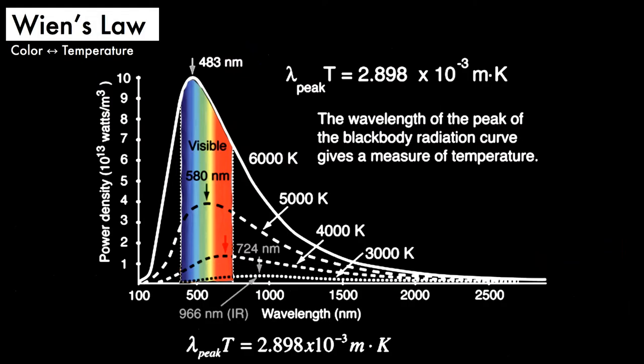Here is the Wien's law graph which shows the relationship between color and temperature. On the y-axis there is power density, whereas on the x-axis we have wavelength. You can easily observe that the color of the black body is going to change with temperature. A visible spectrum which is about 580 nanometer wavelength is also present here.